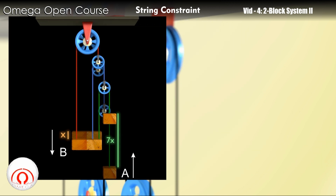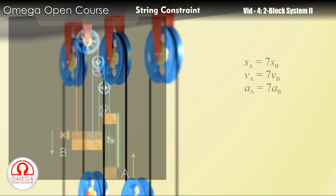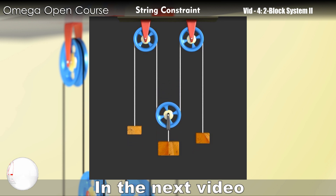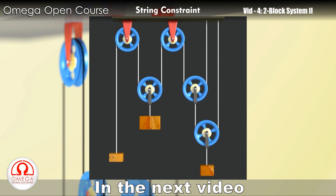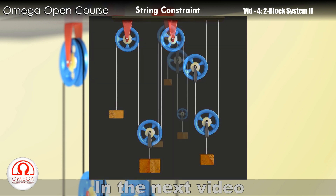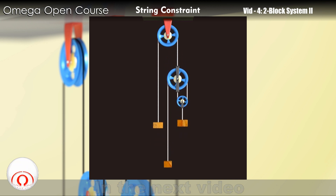Thus, the magnitude of displacement, velocity, and acceleration of the block on the right is 7 times that of the block on the left. I hope this video helps you understand constraint relations of 2-block systems with 3 strings. Similar logic can be extended to systems with more strings. In the next video we will cover systems with 3 blocks.